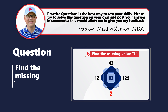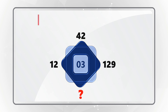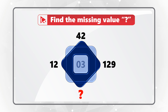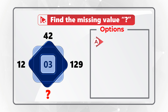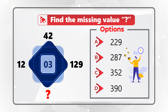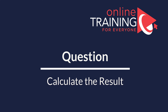Here's a practice question for you to solve on your own. Find the missing value represented by a question mark in a shape containing numbers 12, 42, 129, and a number 3 in the middle. Choices are: A — 229, B — 287, C — 352, D — 390. Recognize the pattern and post your answer in comments so I can give you feedback.